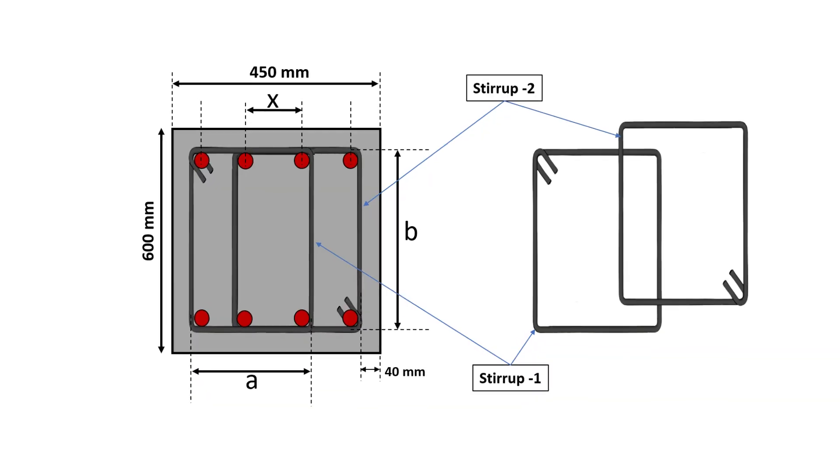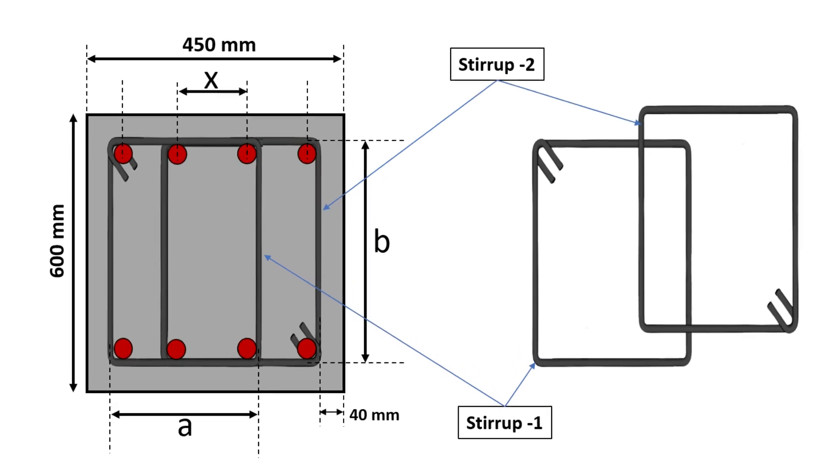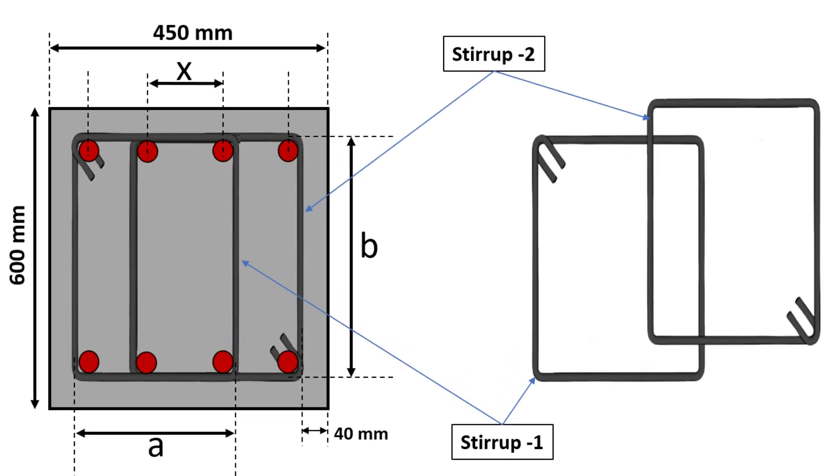In four-legged stirrups, the cutting length of stirrup 1 and stirrup 2 are the same. So, we will find out the cutting length of a single stirrup.